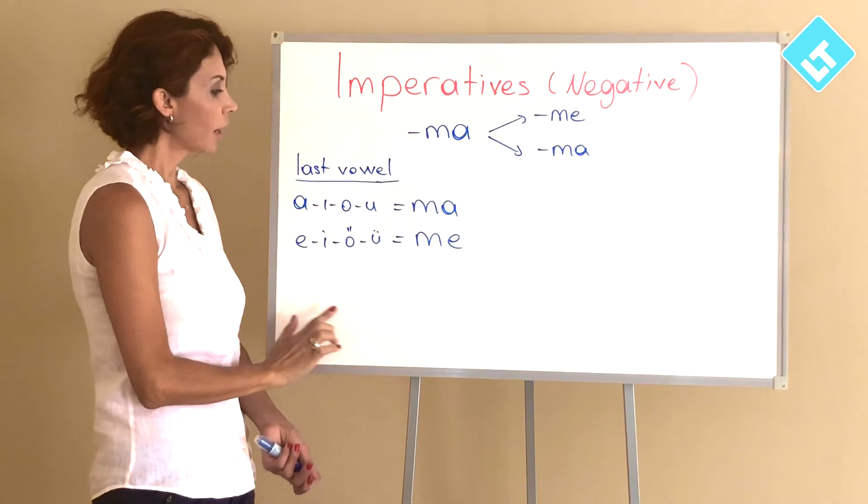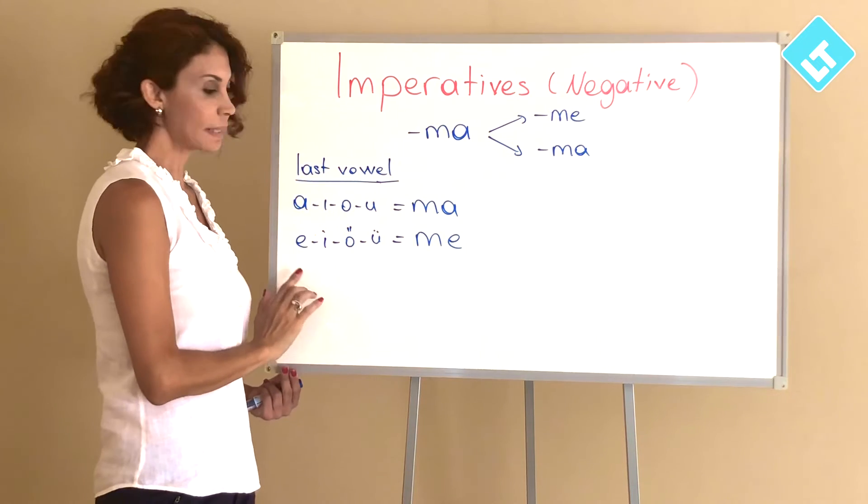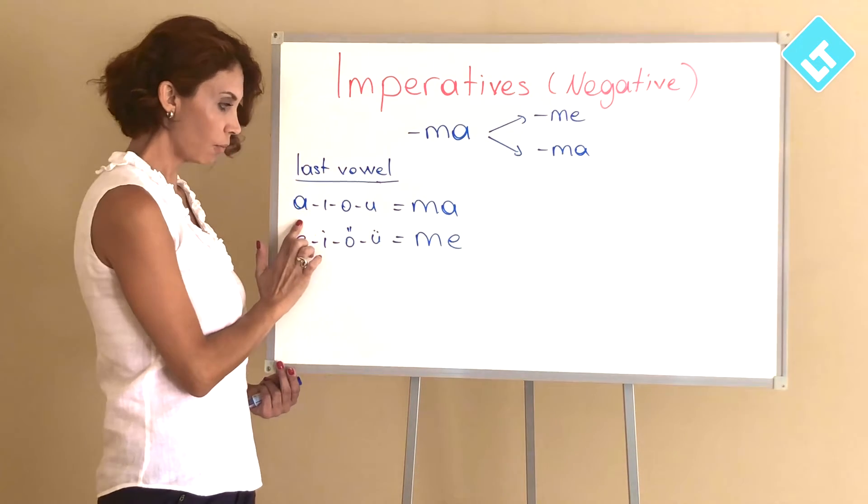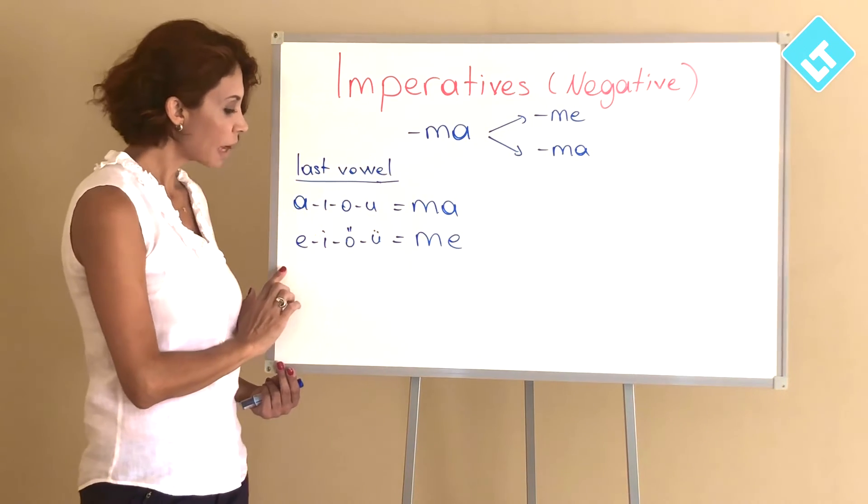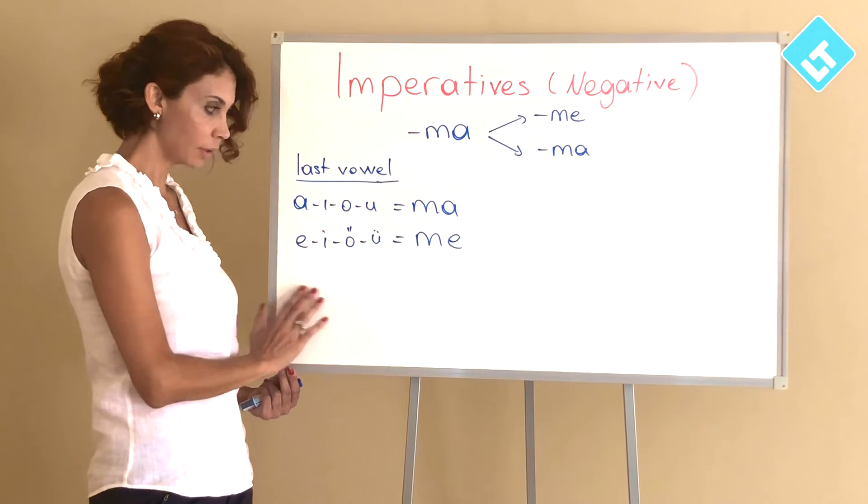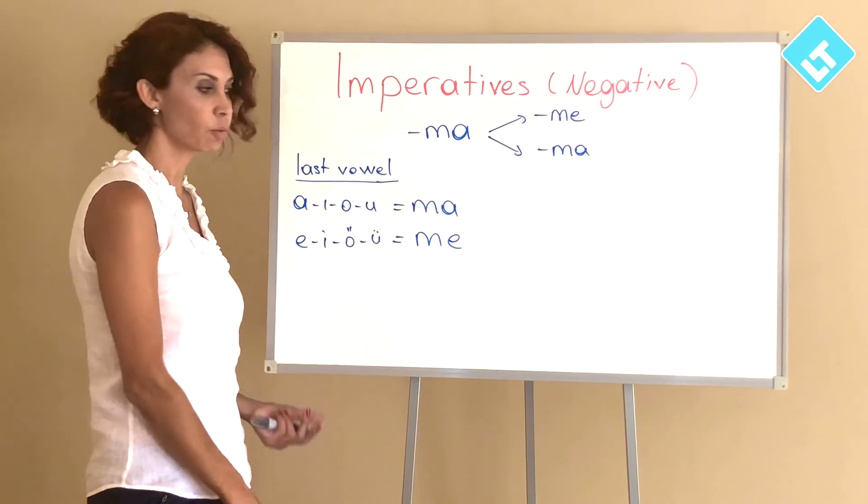If you don't know this harmony system, you should watch this video. But just a quick reminder: if the verb is ending with one of the back vowels, we will add -ma suffix. If the verb is ending with a front vowel, we will add -me suffix to make it negative.